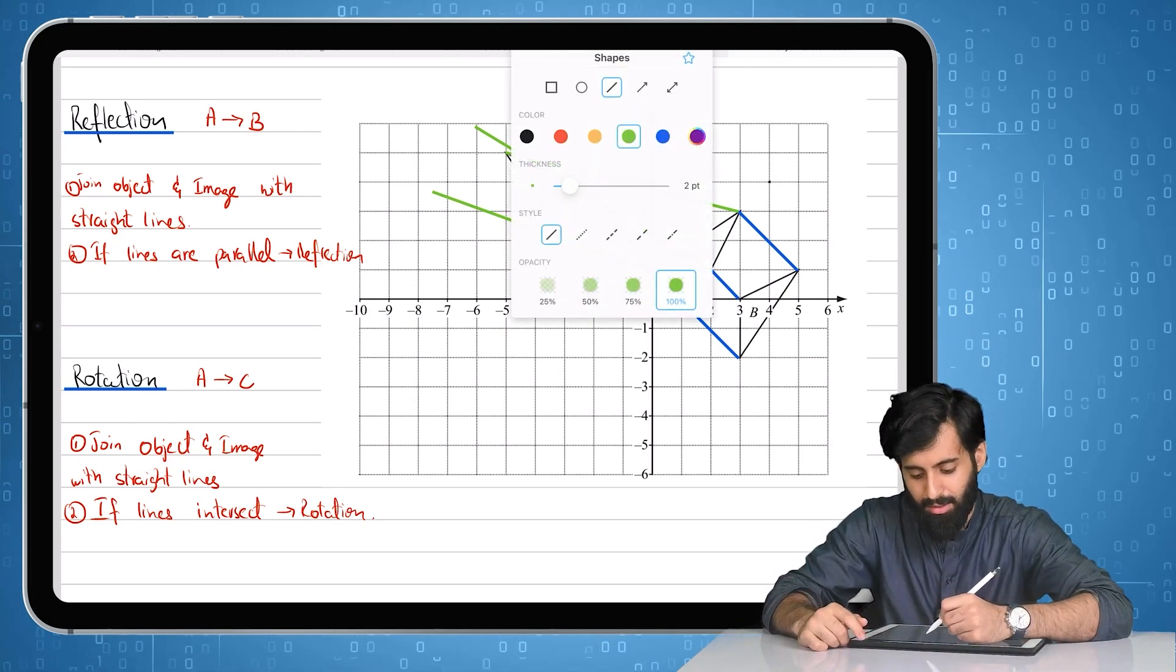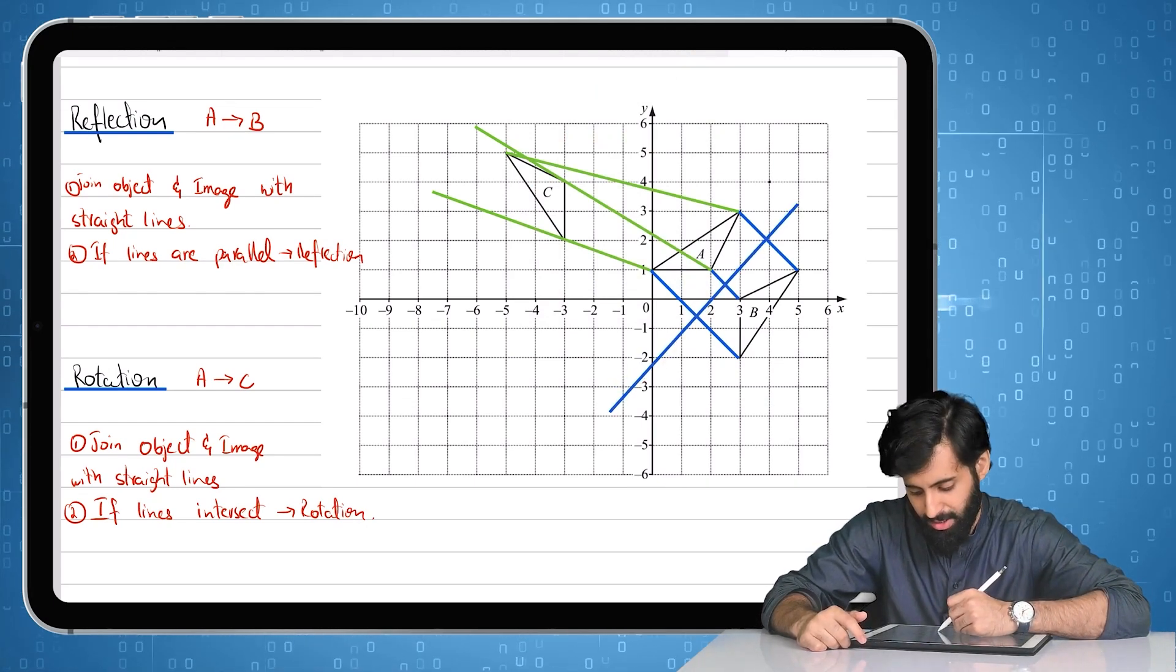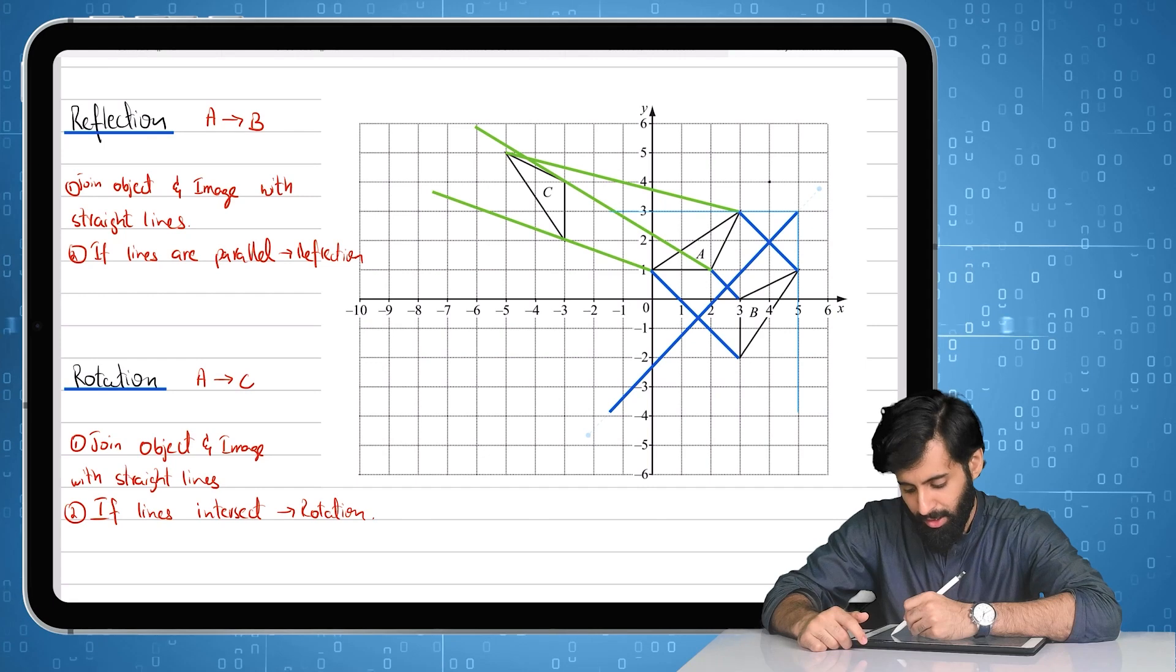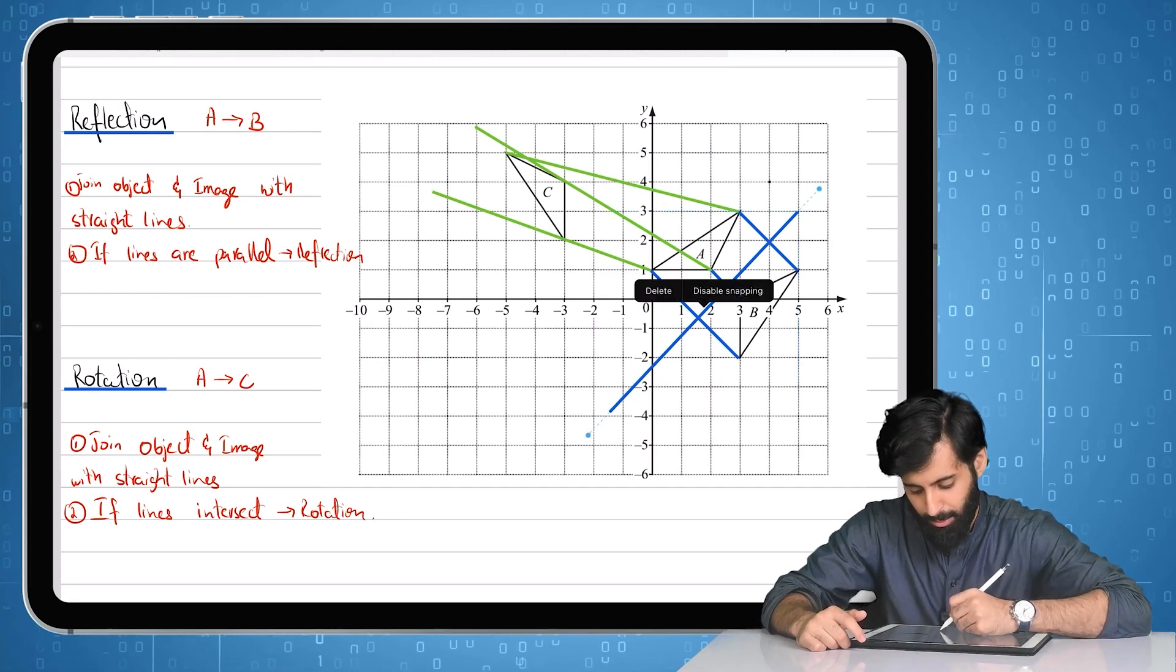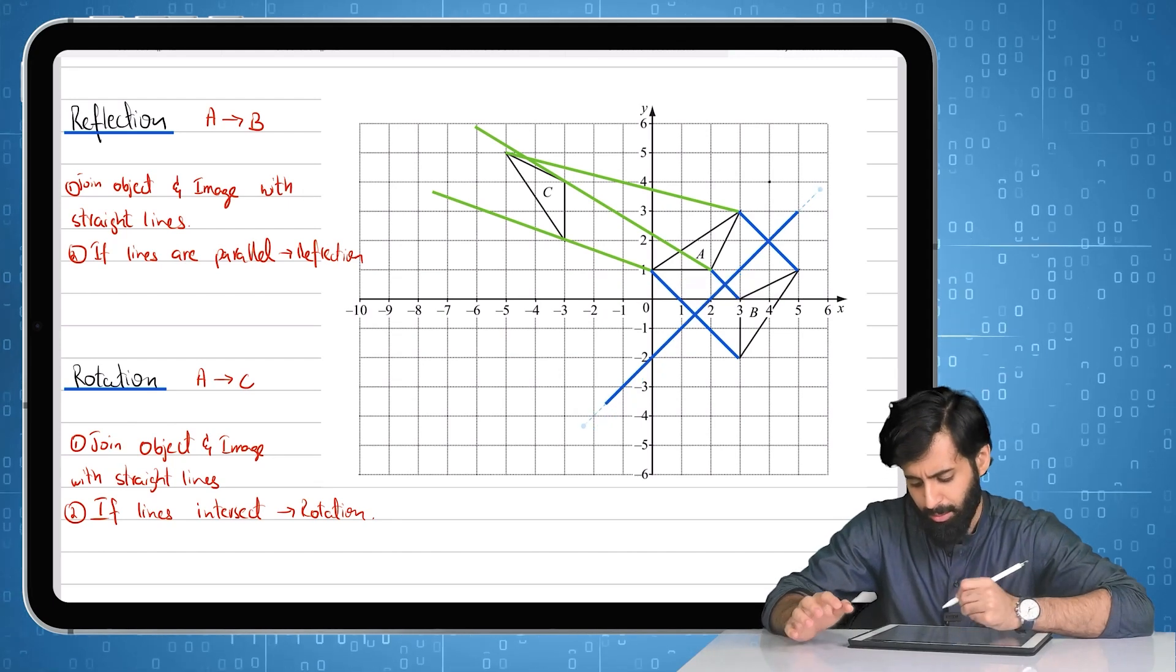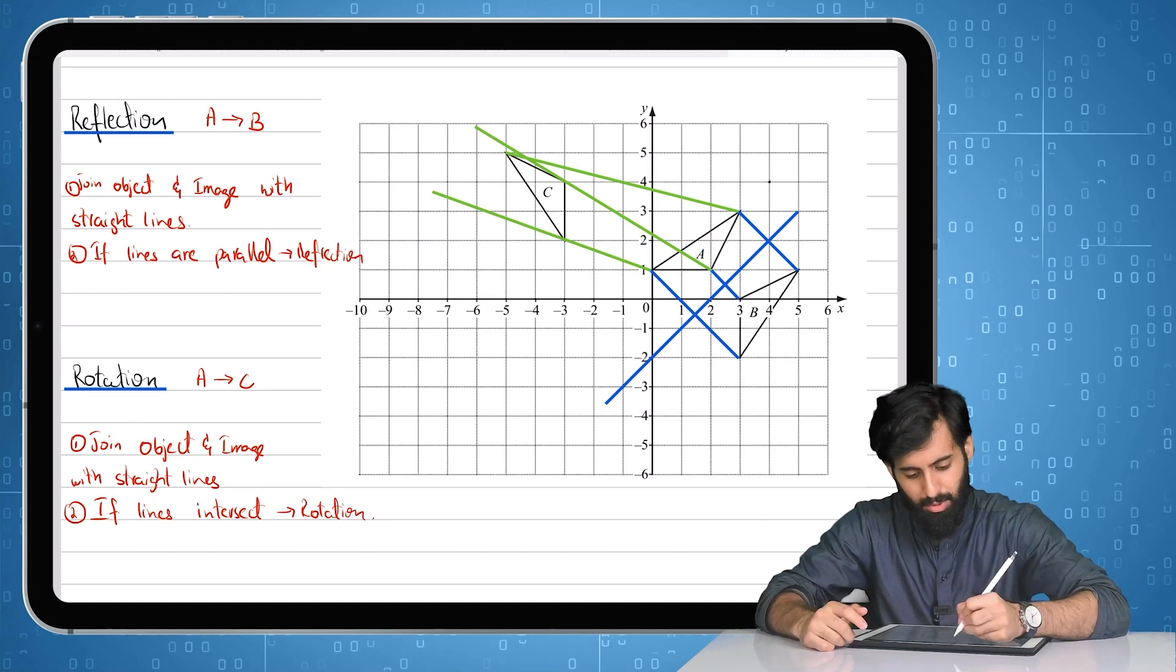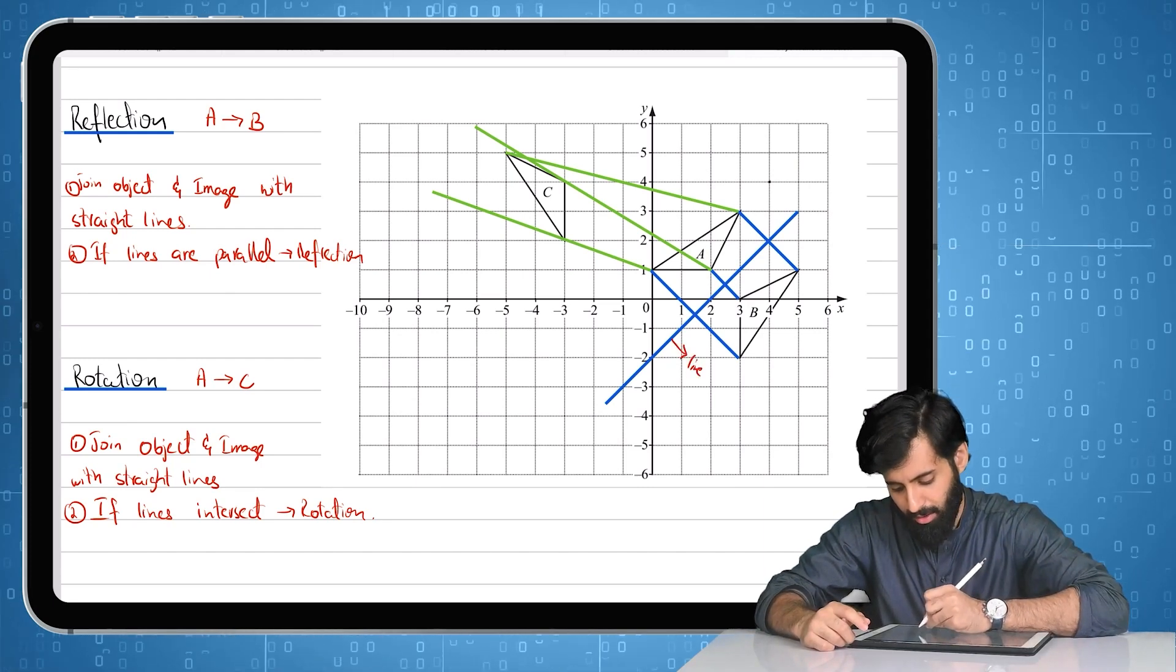And remember with reflection, the next step is that once you've identified it's reflection, you've got to be able to find out the line of reflection. And the line of reflection is basically obtained by connecting all the midpoints, by connecting basically the midpoints of the object and the image. And this is basically what the line of reflection is going to be right here.